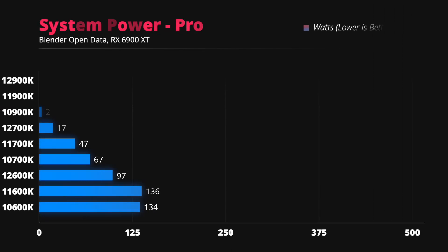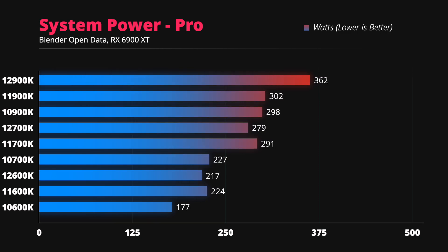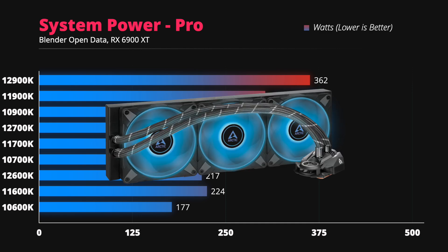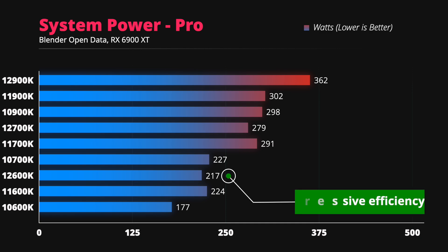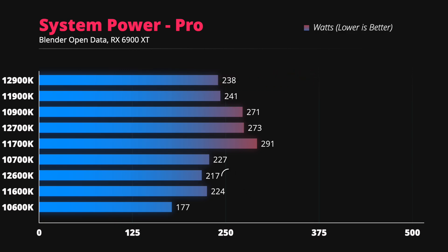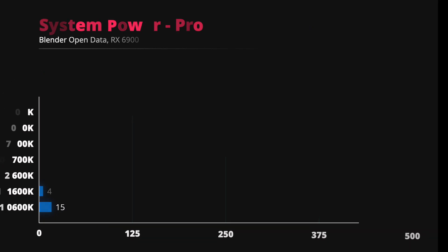Looking at the 362W total system power consumption in Blender, it becomes clear that Intel pushed the 12900K to its limits to achieve such superior performance — a massive cooler is a must-have. In sharp contrast, the i5-12600K at 217W is impressively efficient, considering it beats previous generations of i9 processors in performance.